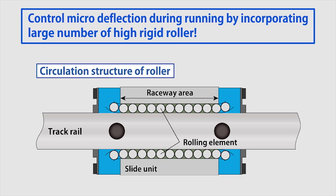Numerous highly rigid rollers are incorporated into the track unit that actually bears the load, and this reduces minute parallelism when the slide unit is traveling.